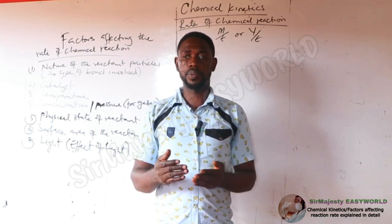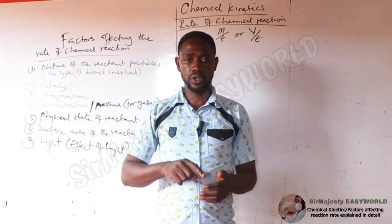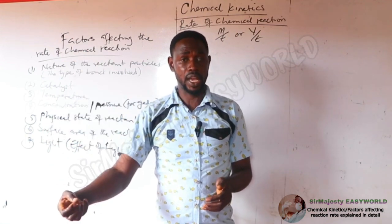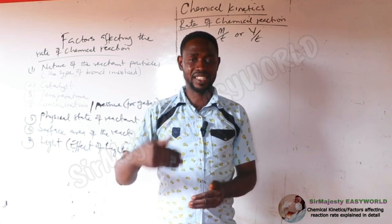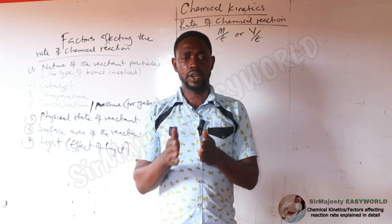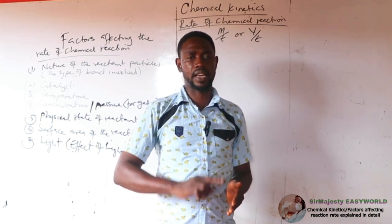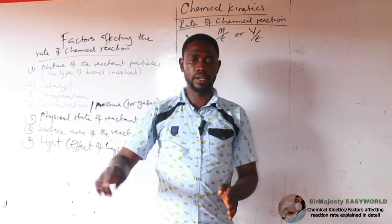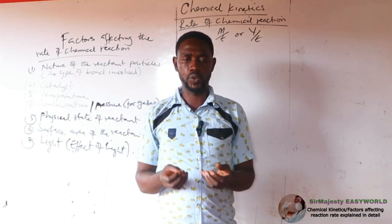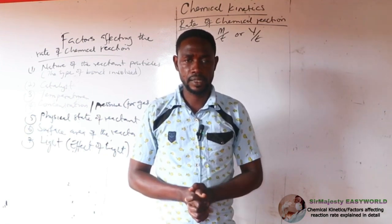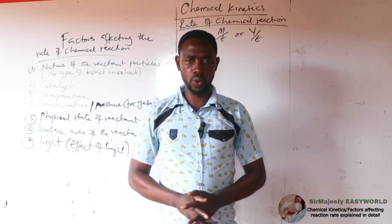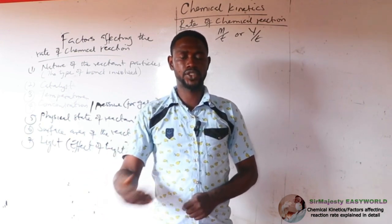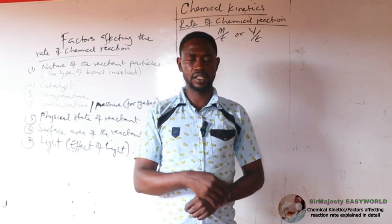When HCl reacts with limestone, the rate will climb high, the effervescence will be strong, then reduce until eventually there is no more effervescence. But if you replace HCl with H₂SO₄, the reaction will start and stop immediately. The reason is that the product formed — calcium sulfate — is insoluble in the acid and stops the reaction.